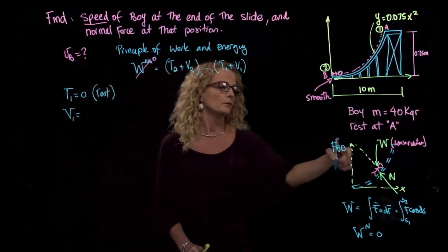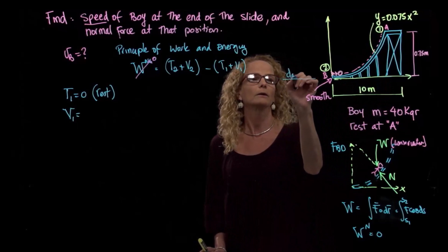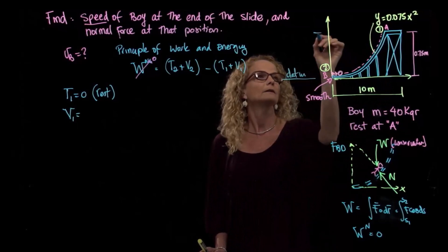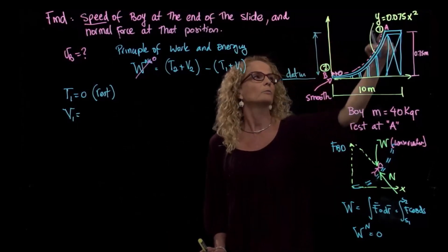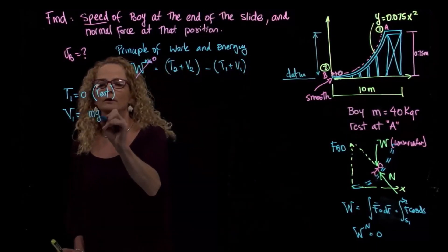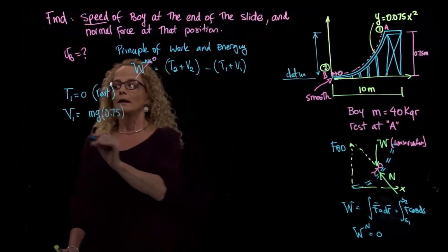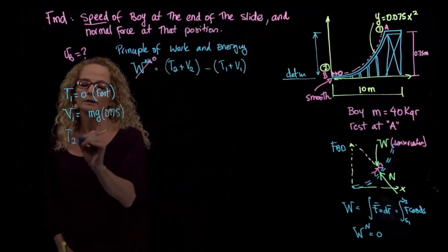Since the only force that I have is the weight, I can start my datum. So if I put my datum over here, I will have this height as potential energy. So my potential energy will be positive and will be that height, which is 0.75, right?